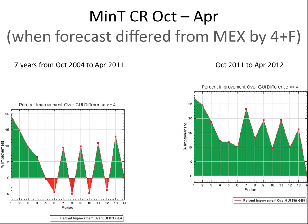Here again for min temperature, when our forecast was at least four degrees different than MEX guidance, you're seeing the same signal, and that signal continues into the short term. We're about five percent better than we were in the past, even in the short term. So that's good to see.